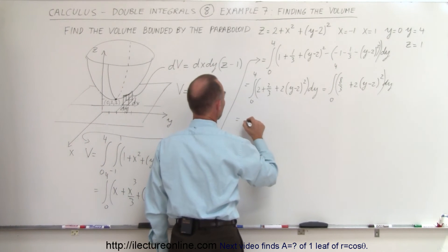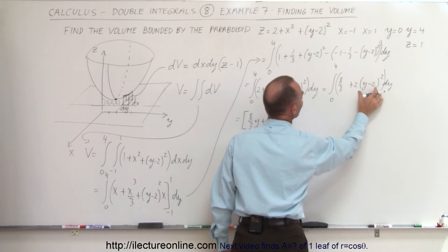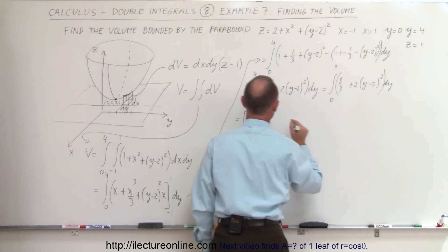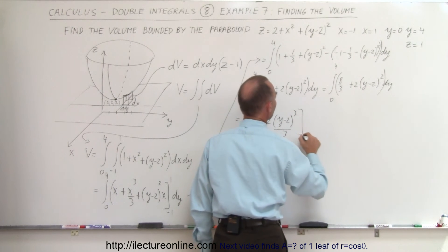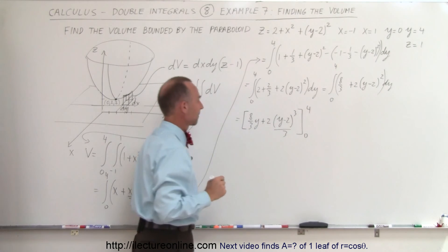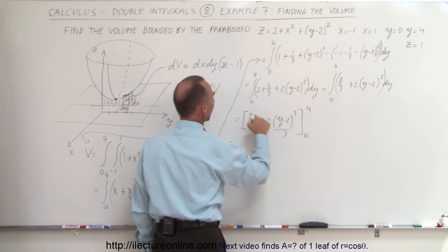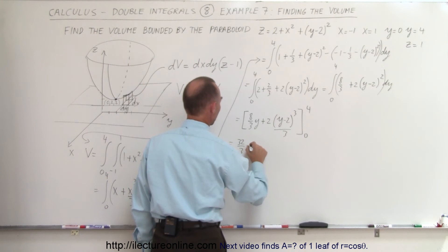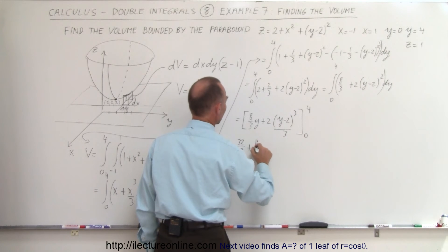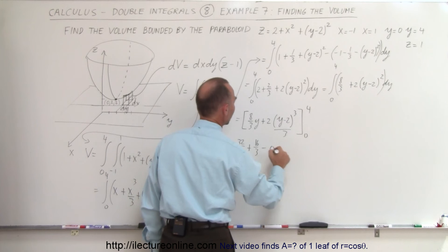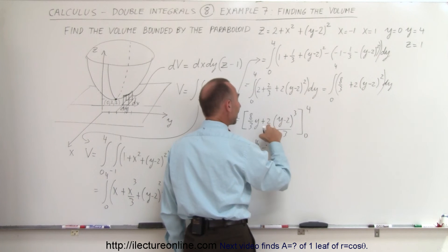Integrating in the y direction: this equals 8 over 3 times y plus 2 times the quantity y minus 2 cubed divided by 3, evaluated from 0 to 4. Plugging in the upper limit y equals 4: 8 thirds times 4 is 32 over 3, and 4 minus 2 is 2, cubed is 8, times 2 is 16, giving plus 16 over 3.